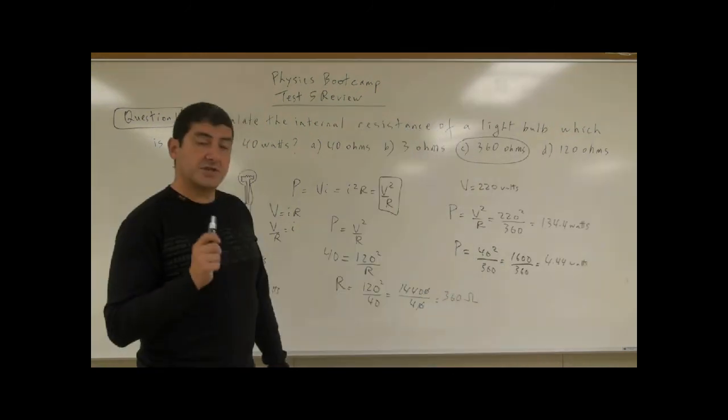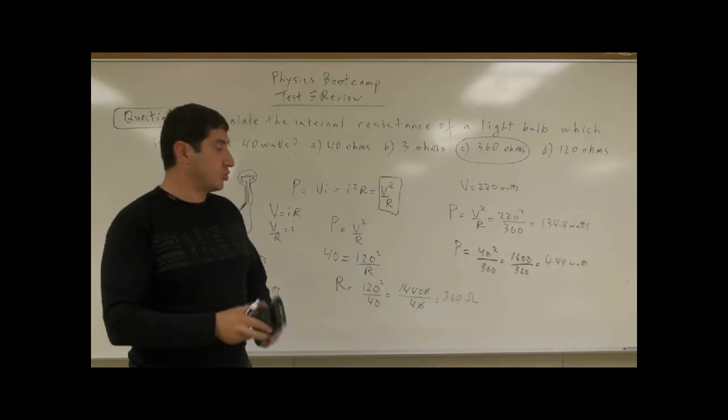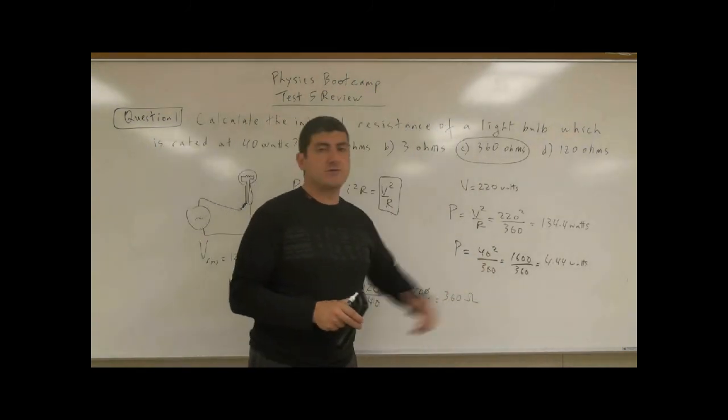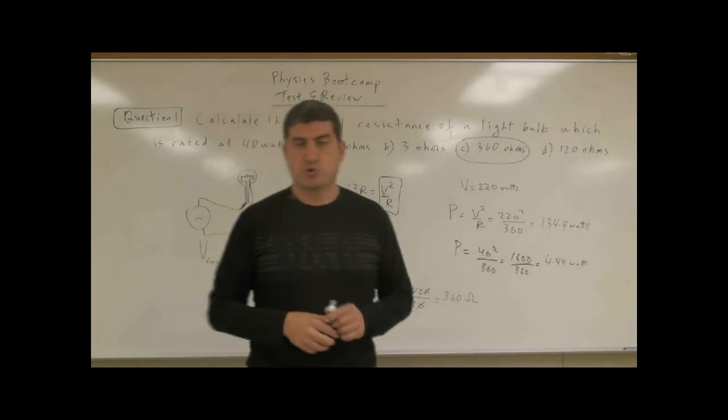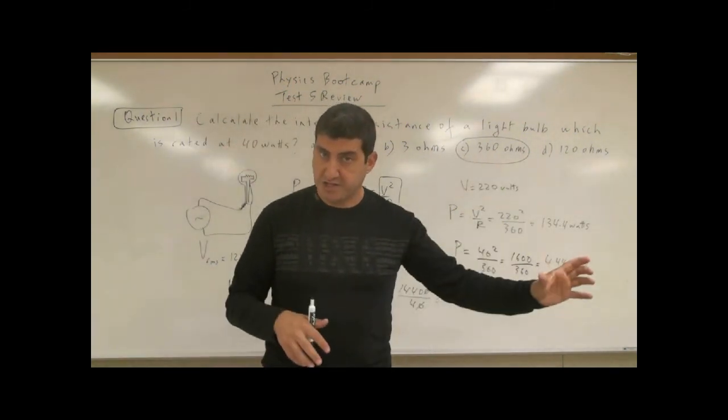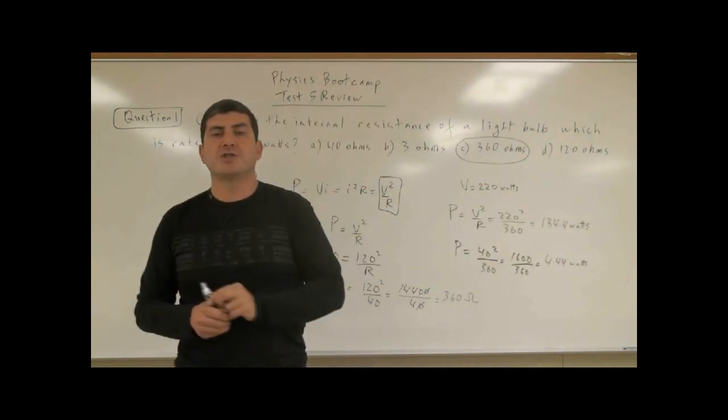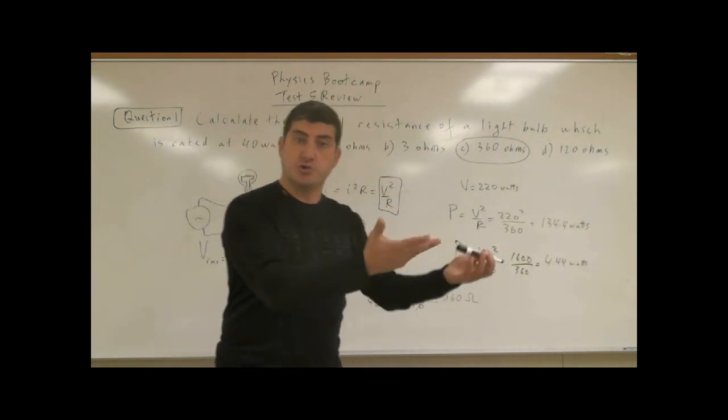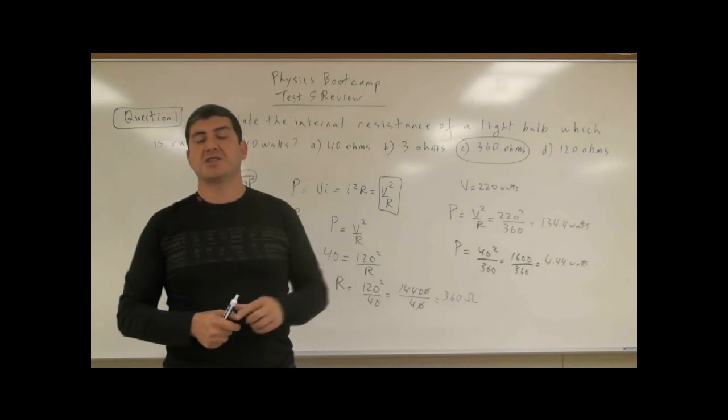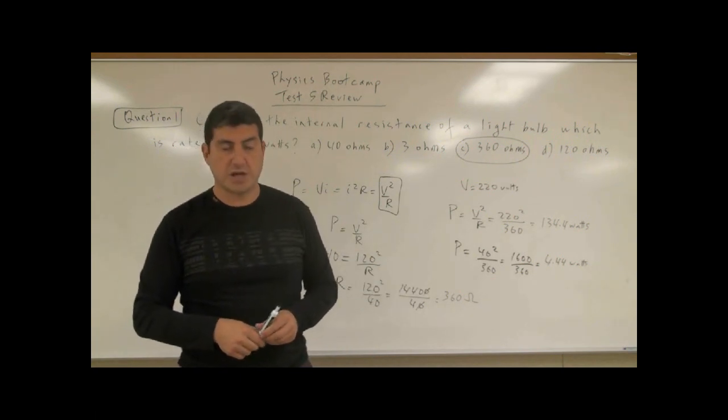So the same light bulb connected to a 40-volt source only gives you 4.4 watts. Now you guys know how to solve these kinds of problems: find the resistance, and then when you connect it to another voltage source, you square that and divide it by the resistance that you already have. Thank you.